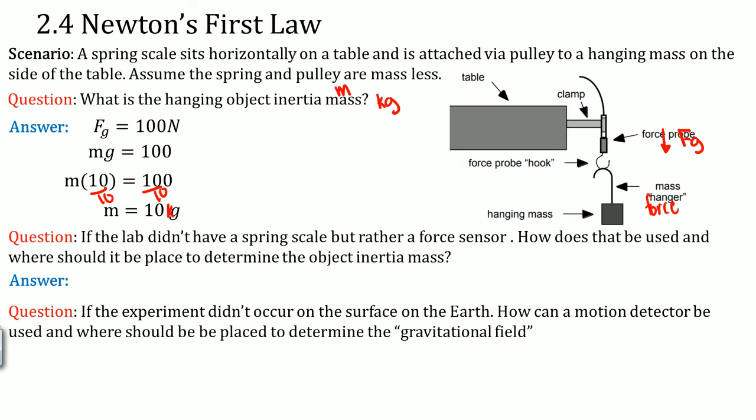Here's the answer: The force probe or the force sensor is going to be attached via a clamp onto the table. Once it is attached to the table via clamp, the force probe hangs vertically, which is the up and down direction. There is a hook that is attached to the hanging mass. As it gets pulled down, the force probe will record the force of gravity in newtons that is being pulled down.